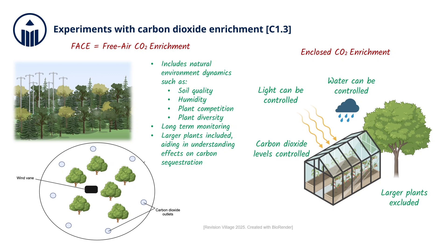In enclosed chamber experiments, plants are grown within a contained space, such as a greenhouse, where variables can be precisely controlled to isolate the effects of specific factors, such as CO2 levels, light, and water. In growth chambers, the air can be enriched with CO2 to simulate future atmospheric conditions, and researchers can study how plants respond to changes in CO2 concentrations. These experiments are valuable for short-term studies and for examining how individual plants or small groups of plants can react to changes in CO2 levels.